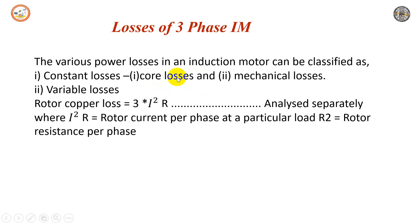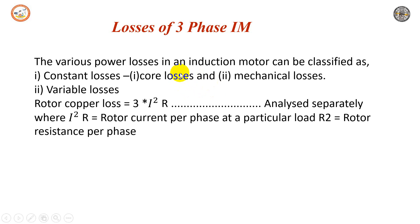The iron loss or core loss depends on frequency. The stator frequency is always the supply frequency, hence stator iron losses are dominant. In contrast, the frequency of the rotor is very small compared to the stator frequency because it depends on slip times the supply frequency. Hence, rotor iron losses are very small and are generally neglected in the running condition.